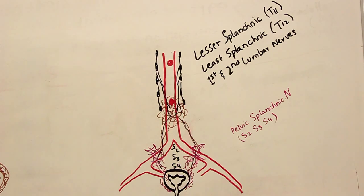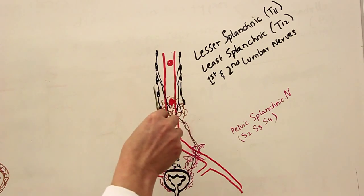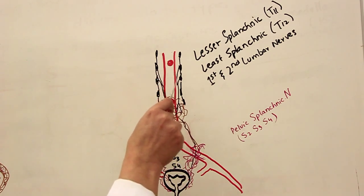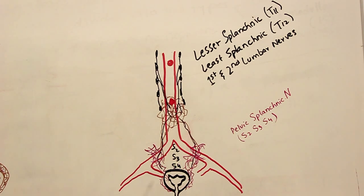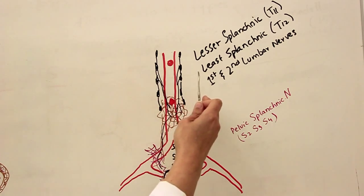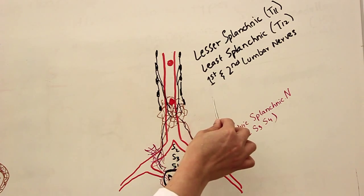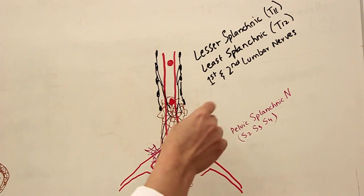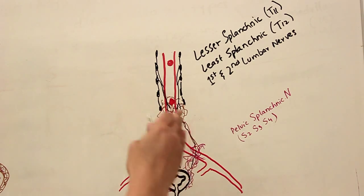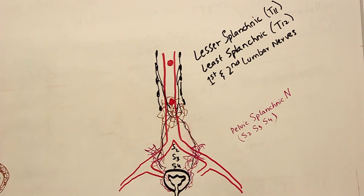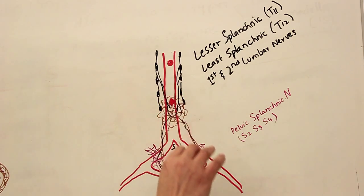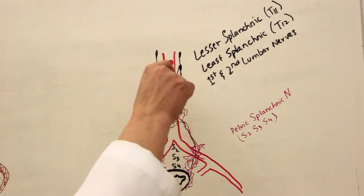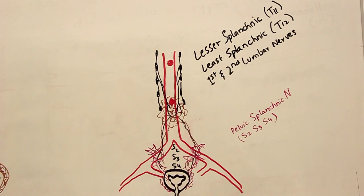The afferent component of the sympathetic system has its cell bodies in the T11, T12, L1, and L2 segments of the spinal cord. So pain originating from the bladder can be felt in regions supplied by those levels — it can be referred to the lumbar region, the inguinal region (due to L1 and L2), and into the thigh, because L2 contributes to the femoral nerve. So referred pain from the bladder via the sympathetic afferent system can be felt in the lumbar, inguinal, and upper thigh regions.